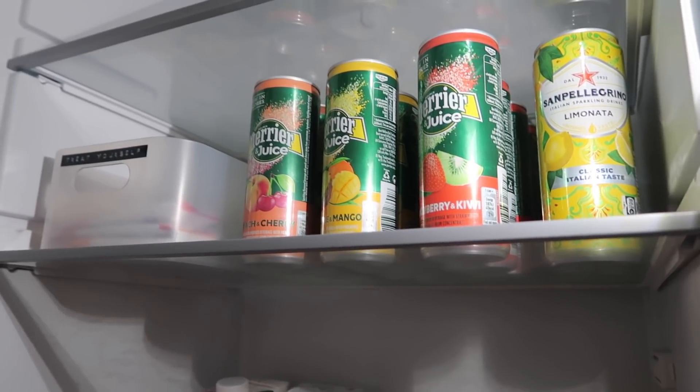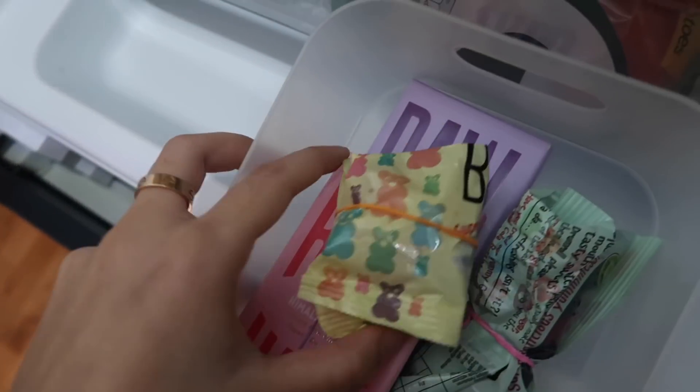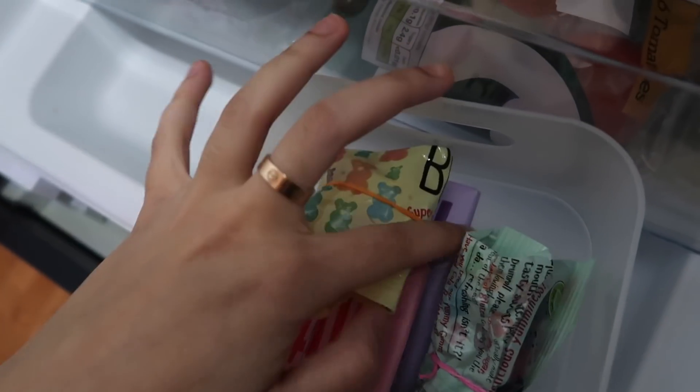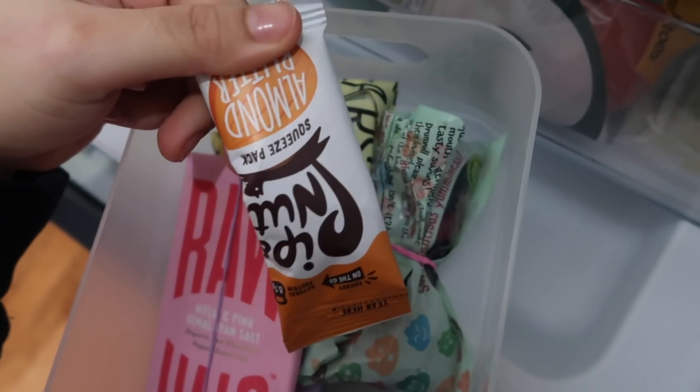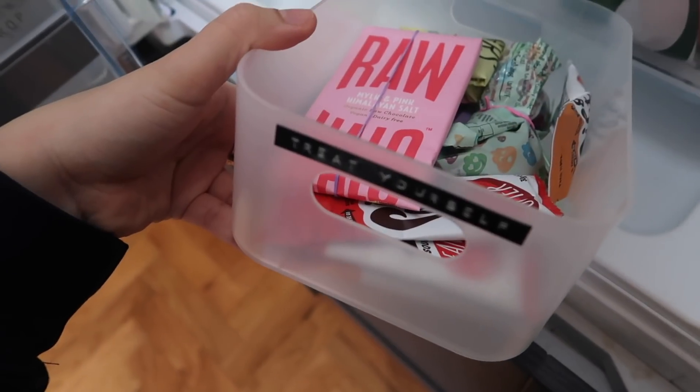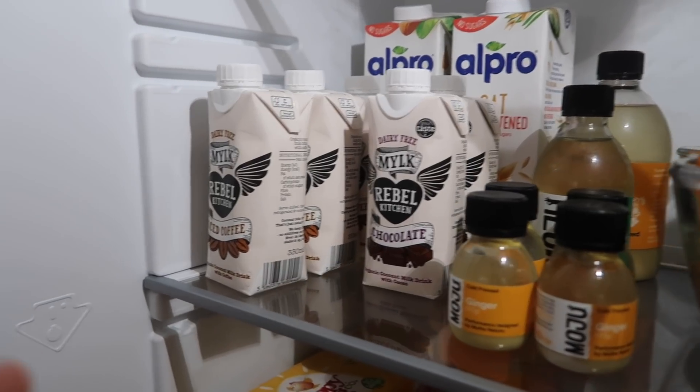I have some lemon and lime at the back. This is a treat yourself box and I have a bunch of like this is vegan gummy, another vegan gummy, some vegan chocolates and some peanut butter.